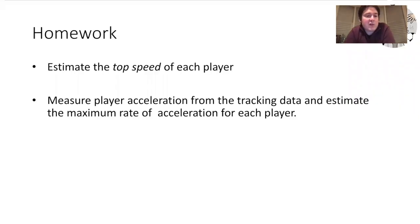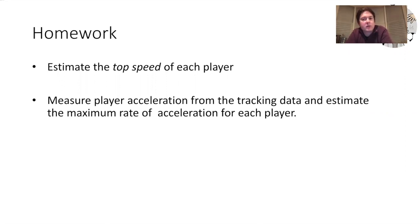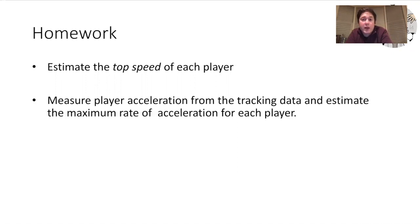Finally, here's a little bit of homework — two tasks. First, see if you can develop a method for estimating the top speed of each player in the data samples we've made available. One thing to consider is that a player might not actually reach their top speed in a game — so how could we estimate it based on the data we have? The second task is to measure player acceleration from the tracking data and similarly estimate the maximum rate of acceleration for each player. These are quantities we could then plug into our pitch control model in the next hands-on session.